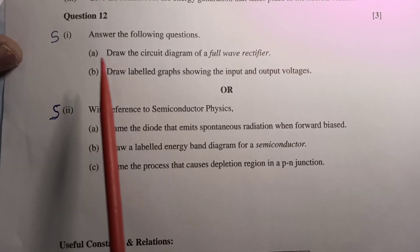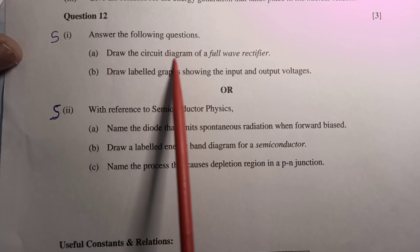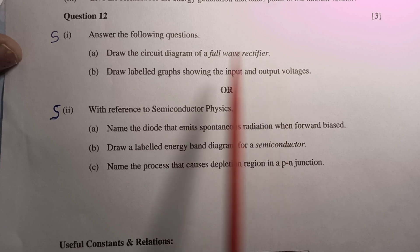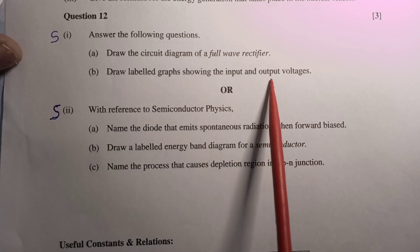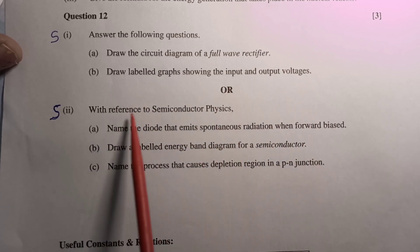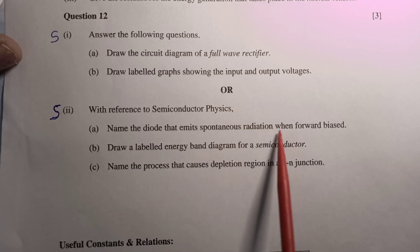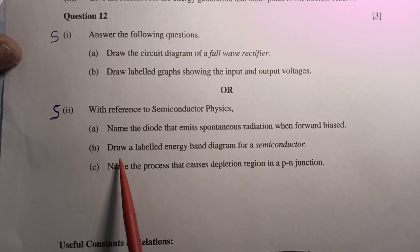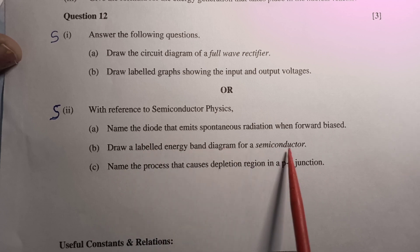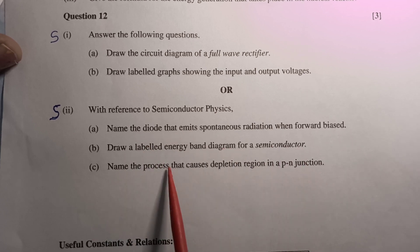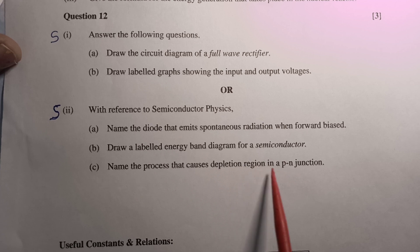Then a three marks question is: answer the following questions - draw circuit diagram of full wave rectifier, draw labeled graph showing input and output voltages. Or with reference to semiconductor physics: name the diode that emits spontaneous radiation when forward biased, draw a labeled energy band diagram for a semiconductor, name the process that causes depletion region in a p-n junction.